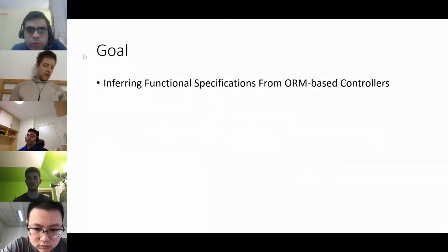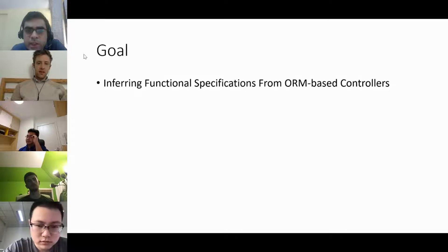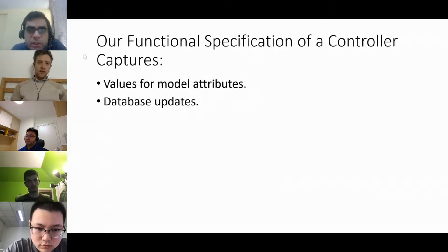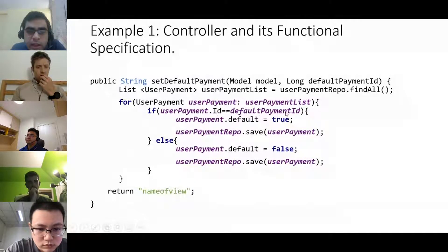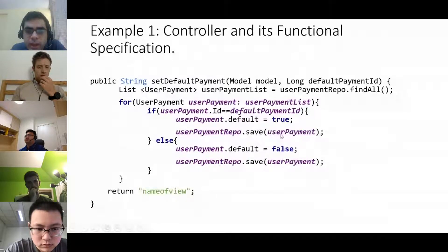Our goal is to infer functional specifications from ORM-based controllers. ORM is a programming technique application developers use to interact with an underlying database in an imperative fashion. Our functional specifications capture: one, values for model attributes presented to the end user, and two, database updates. As an example controller, we iterate over a user payments table — if the condition 'id equals the incoming parameter default_payment_id' matches, we set the default field to true; otherwise false. In both cases we save the record back to the database.